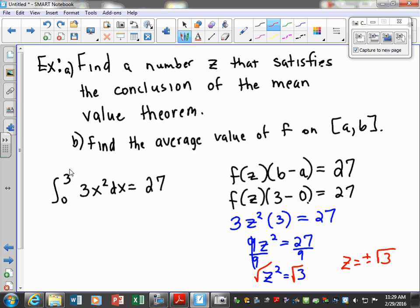But we're only looking at the interval from zero to three, so the only one that gets to apply is going to be our square root of 3, the positive value. So z is equal to the square root of 3. This is the value that satisfies the Mean Value Theorem.